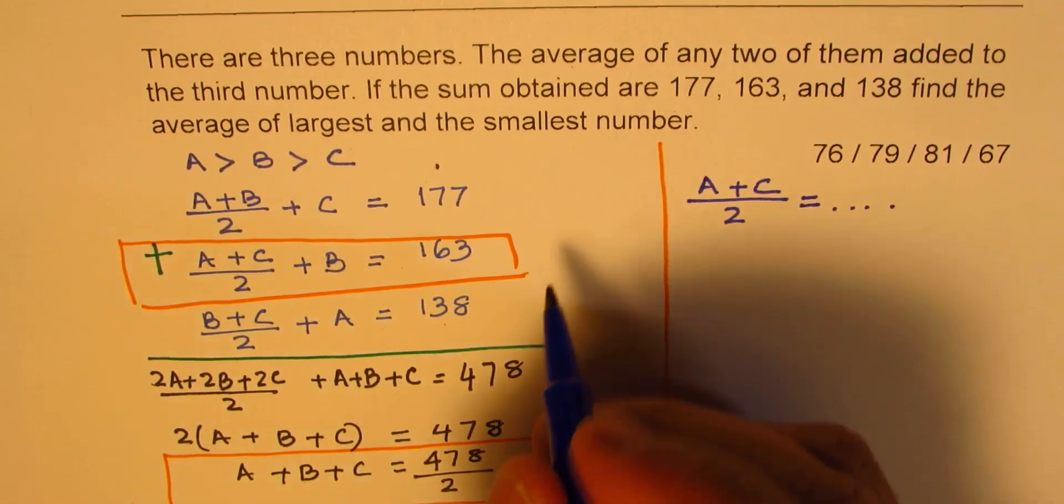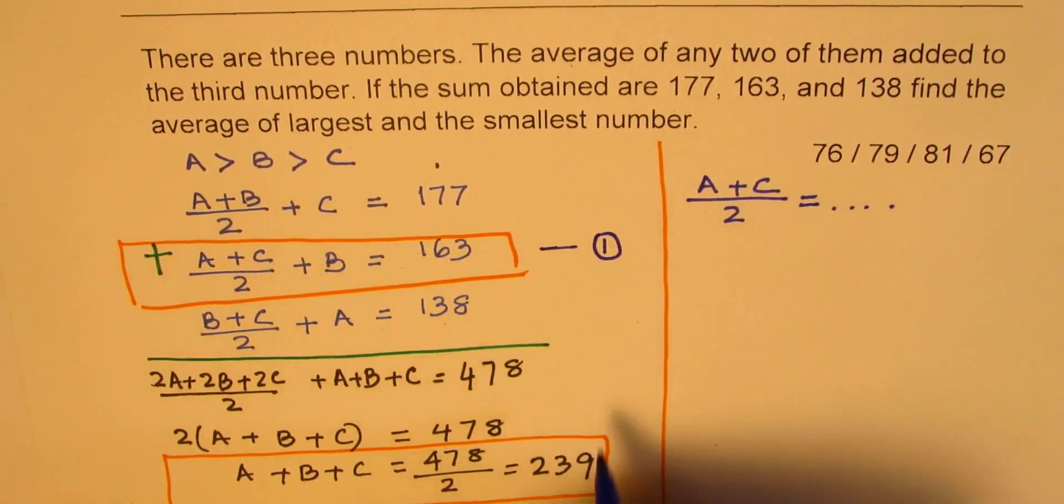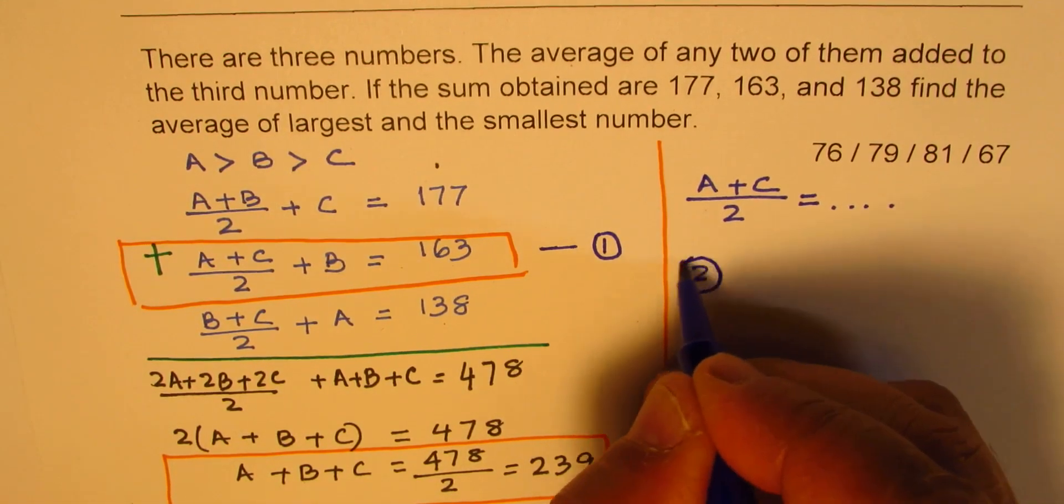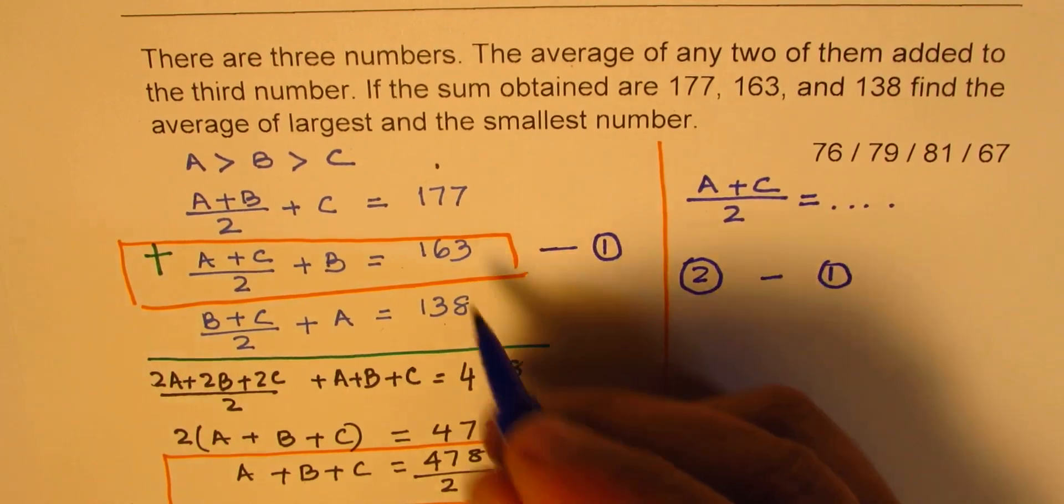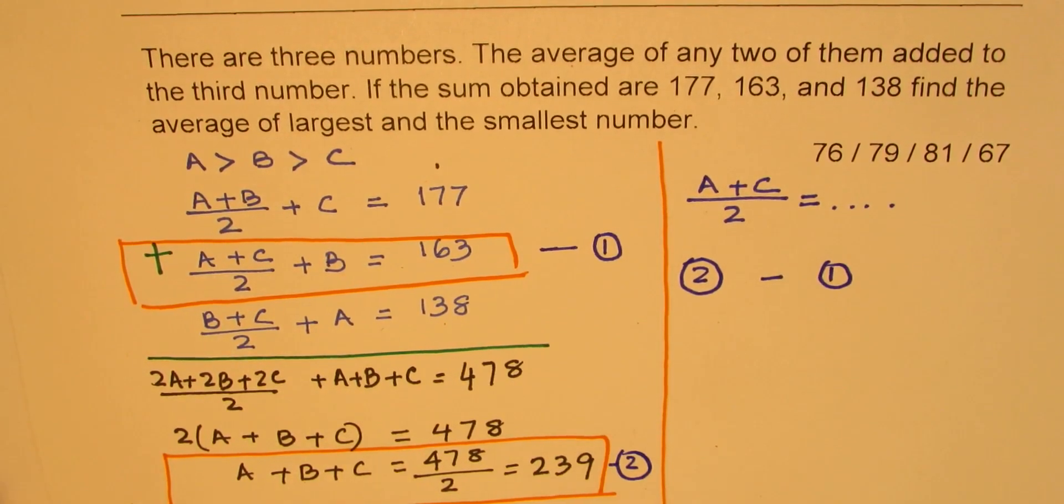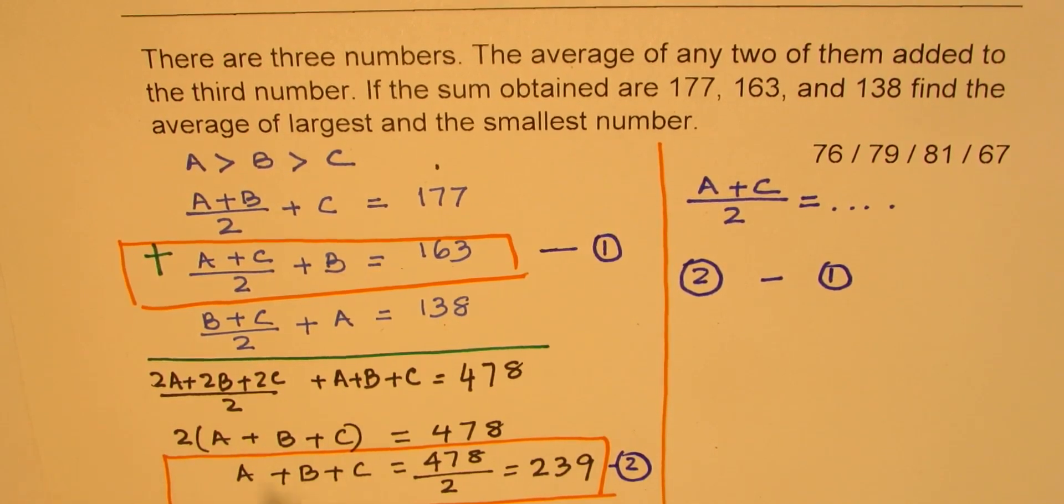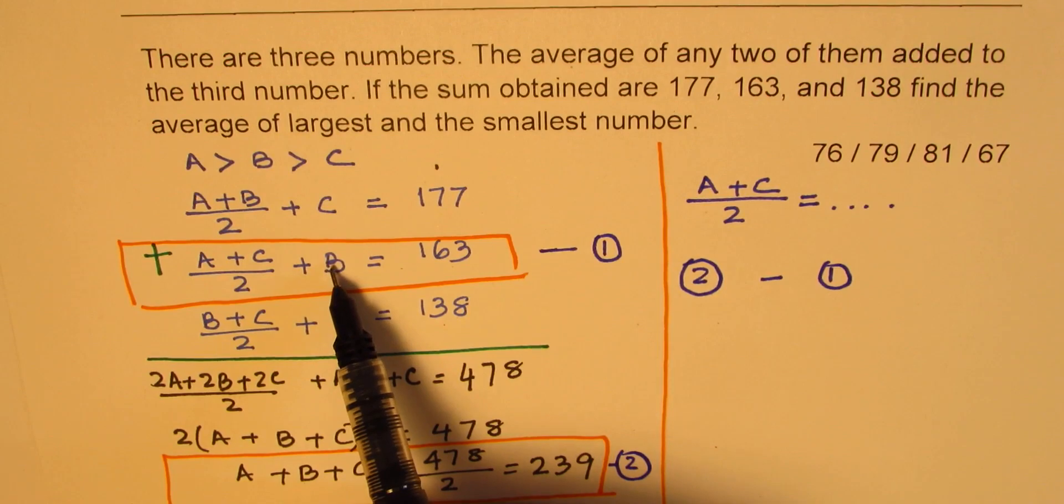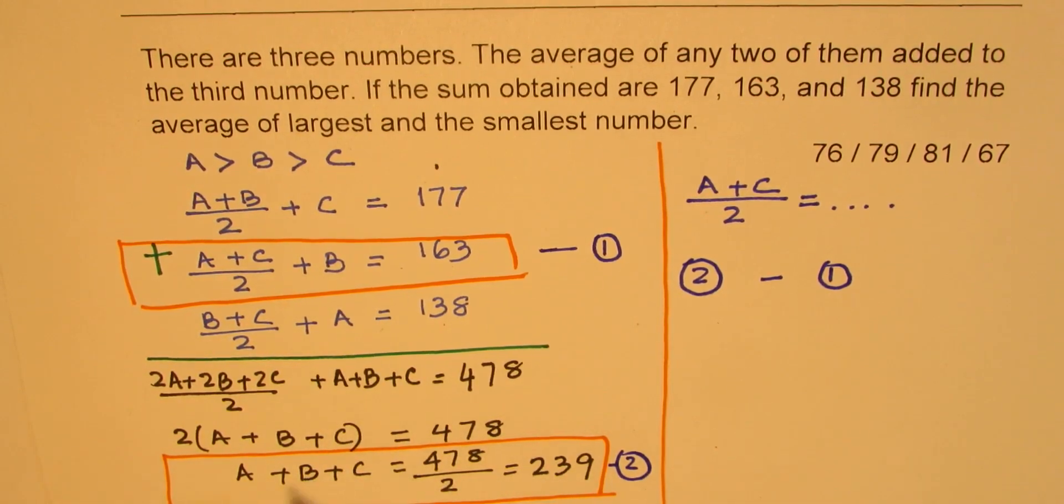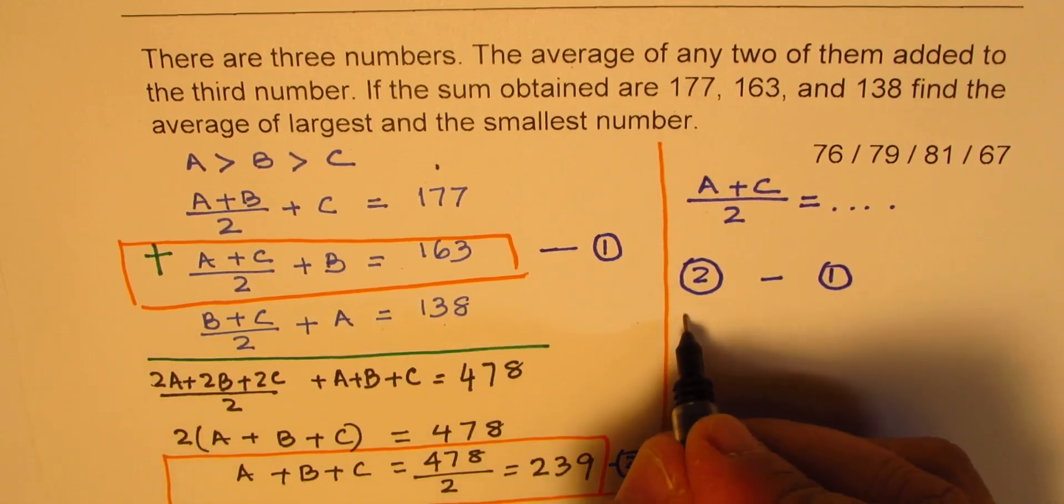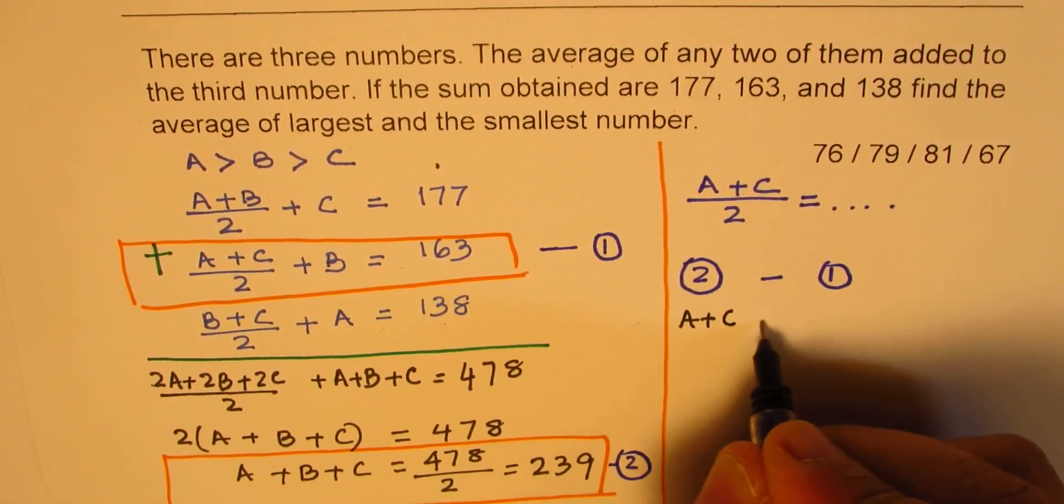So let me call these as my equation 1 and equation 2. Now so if I do equation 2 minus equation 1, what will I get? Well on the left side we could think - when we subtract we get B minus B as 0, and A+C minus (A+C)/2.